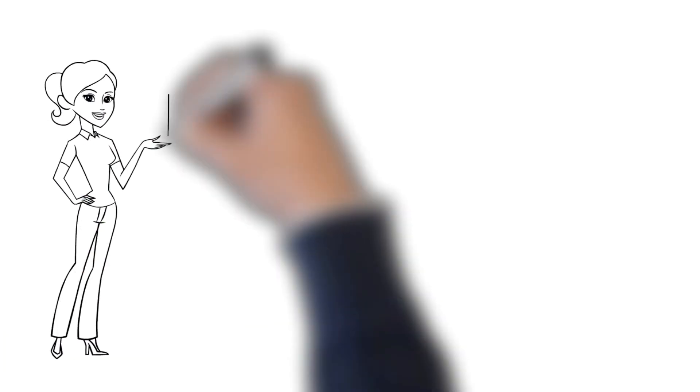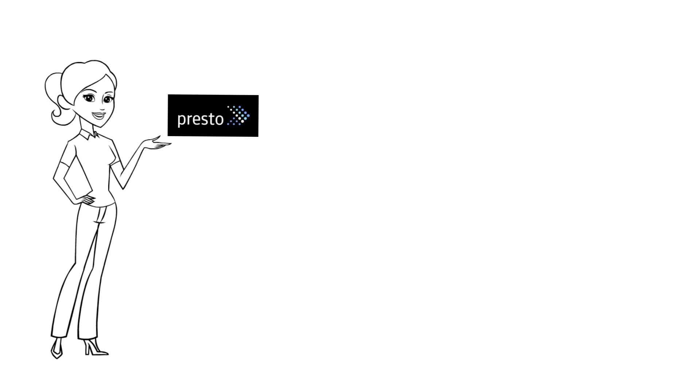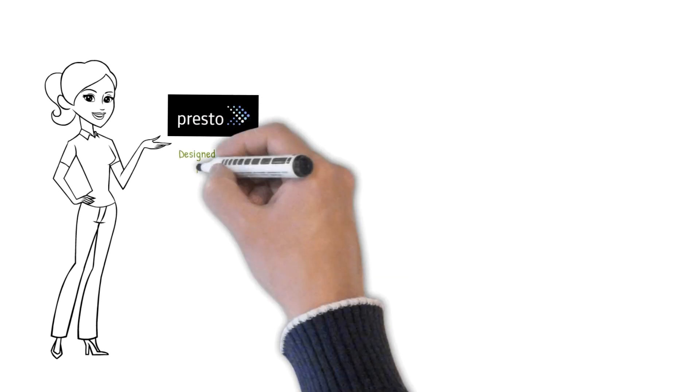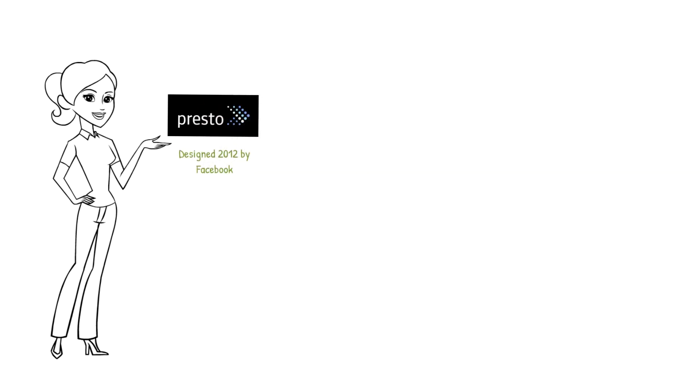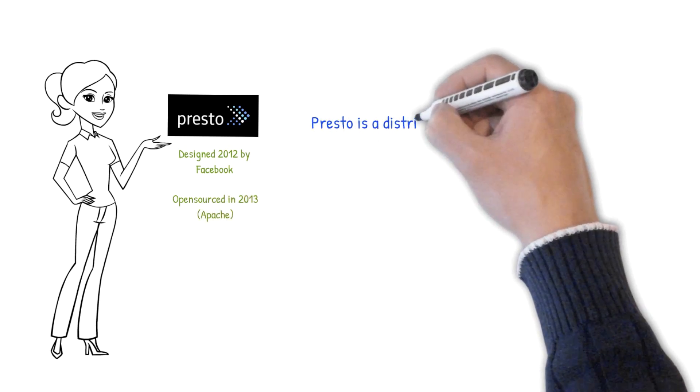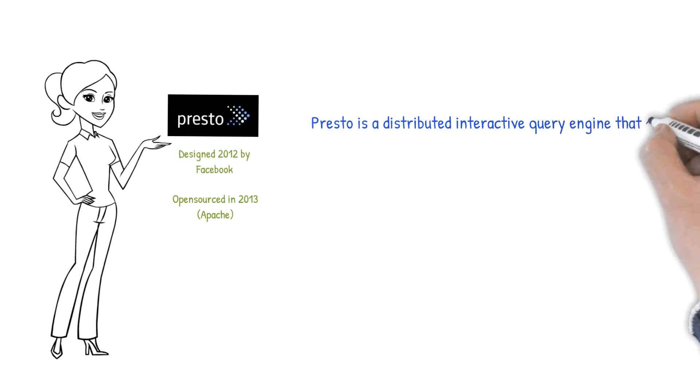This is where Presto comes in. Facebook designed Presto in 2012 and open sourced it in 2013. Presto is a distributed interactive system that allows you to query data in place without the need to move it from where it is stored.